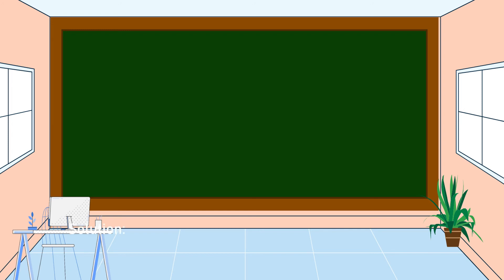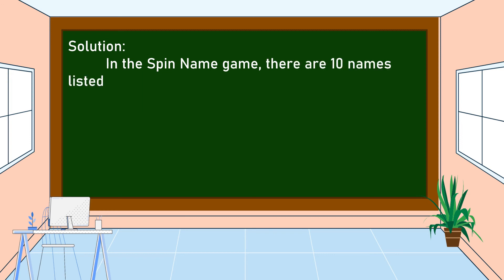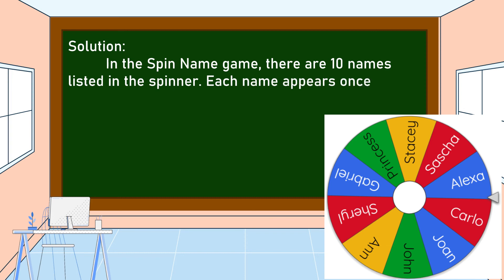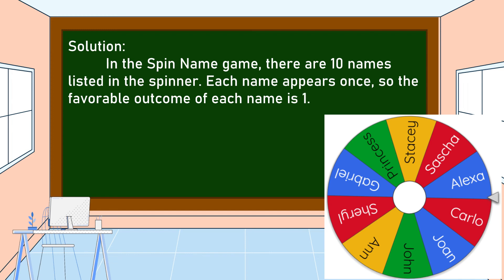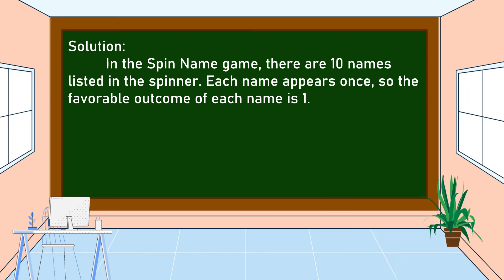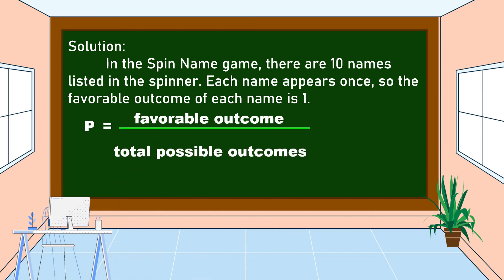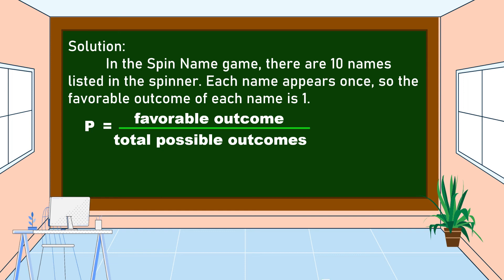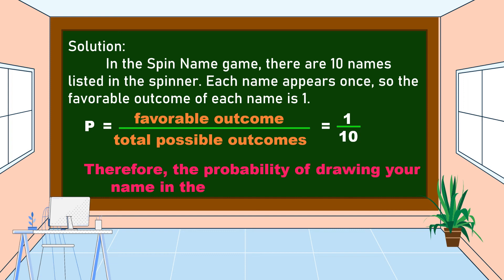This is our solution. In the spin name game, there are 10 names listed in the spinner and your name appears once. So the favorable outcome of your name is 1. The formula to find the probability is P is equal to favorable outcome over total possible outcomes. Our favorable outcome is 1 and the total possible outcomes is 10. Therefore, the probability of drawing your name in the spinning wheel is 1 over 10.